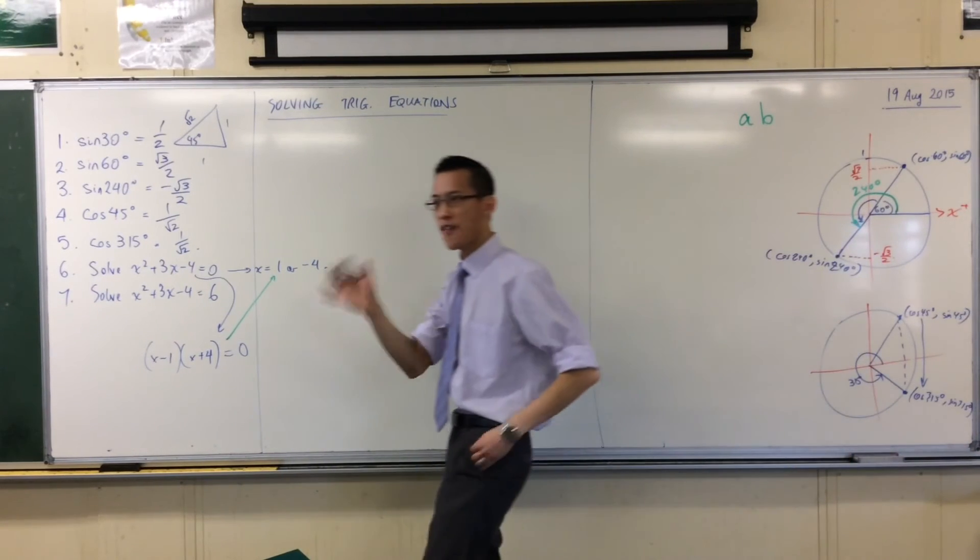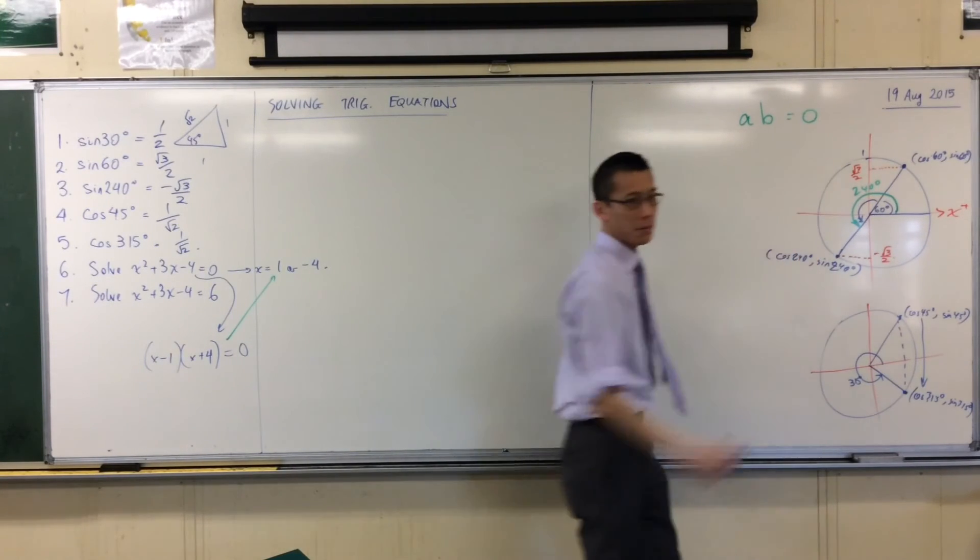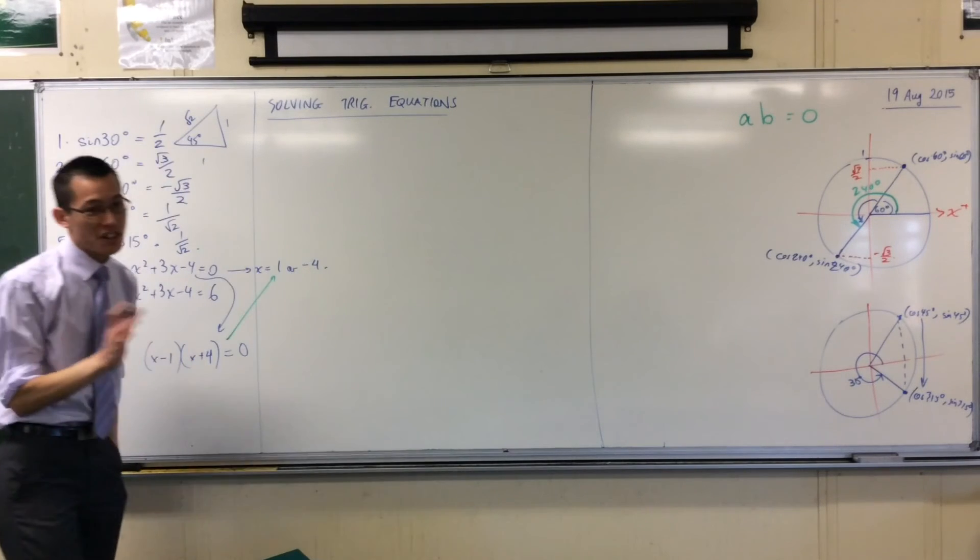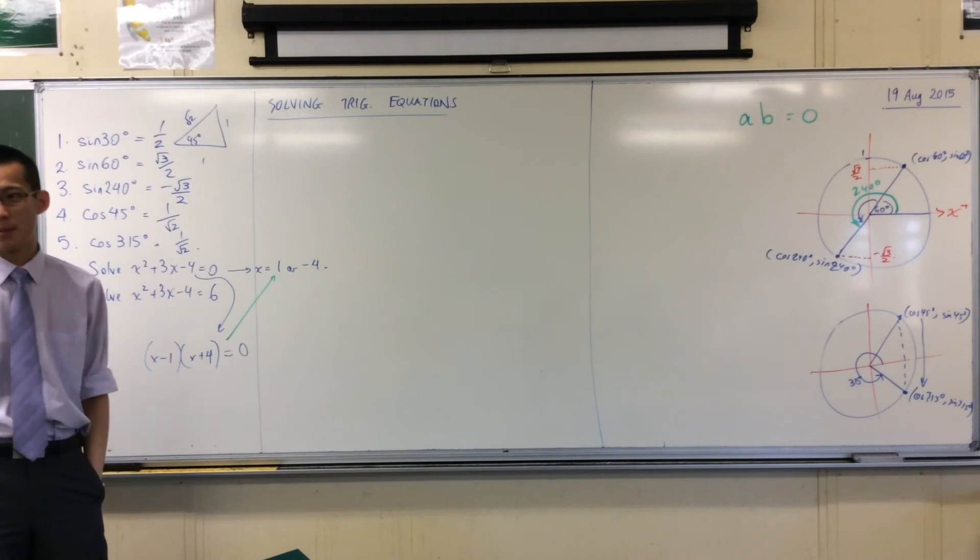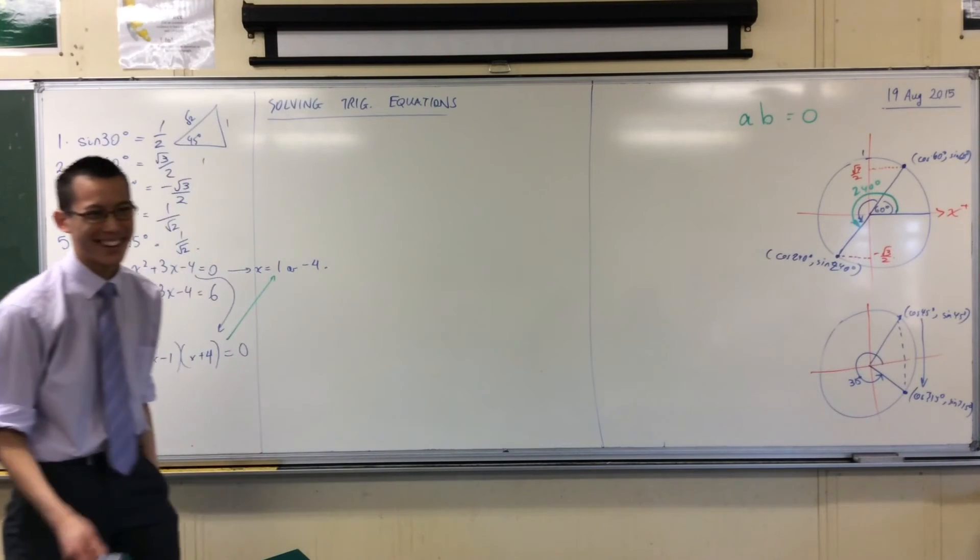And if I multiply them together, then I get 0. Now, immediately, without knowing anything else about this pair of numbers, you know at least one of them, maybe both of them, should be 0.